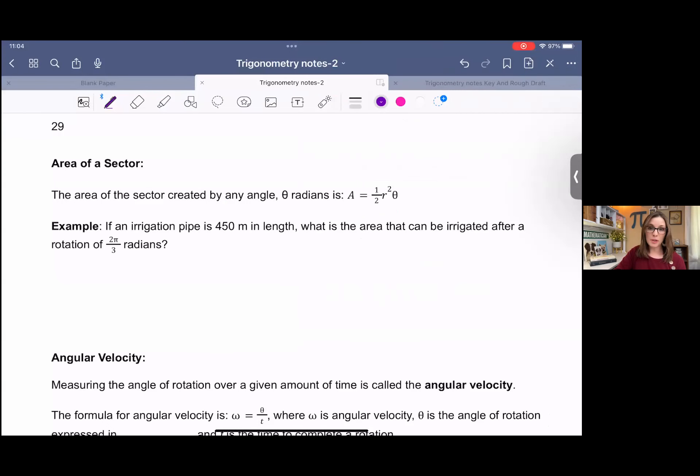The next application we're going to look at for radians is the area of a sector. So the area of a sector created by any angle theta radians is area equals one half of radius squared times theta in radians.